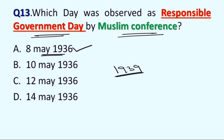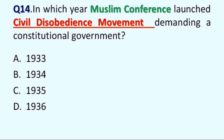Next question is: in which year did Muslim Conference launch the civil disobedience movement demanding a constitutional government? Option A: 1933, Option B: 1934, Option C: 1935, and Option D: 1936. Correct answer is Option A, 1933. In this year, Muslim Conference launched the civil disobedience movement in Jammu and Kashmir.